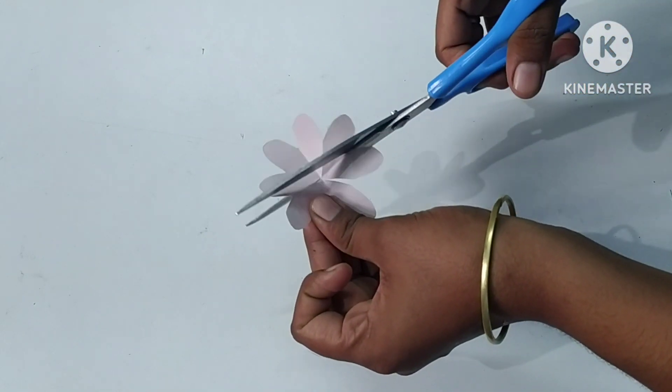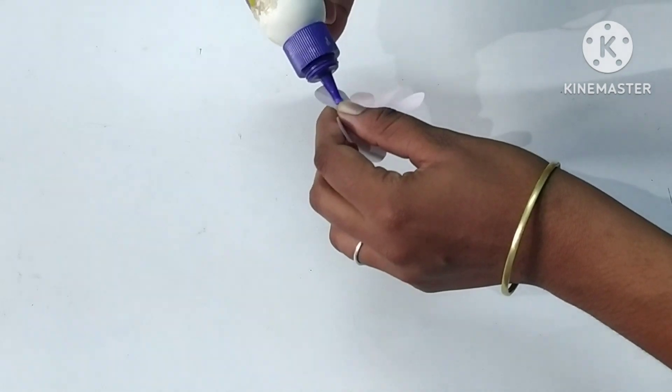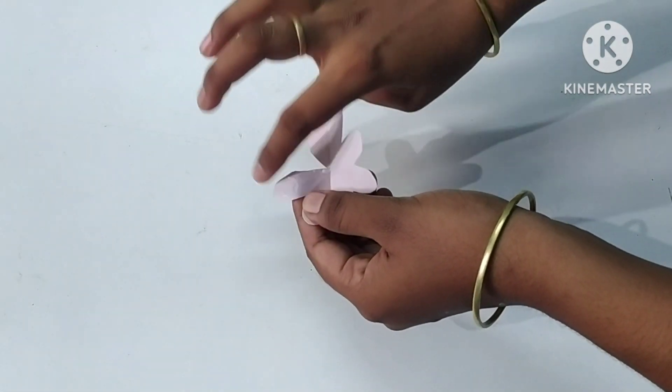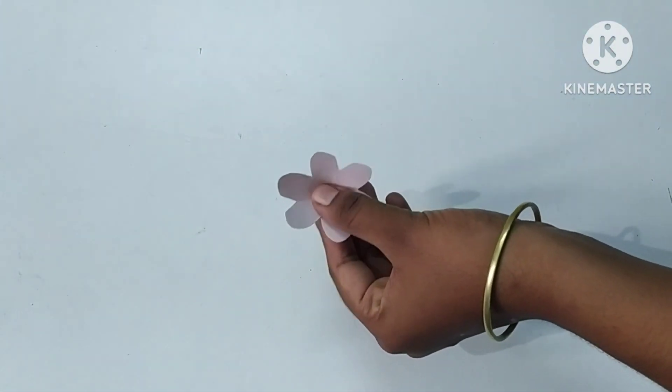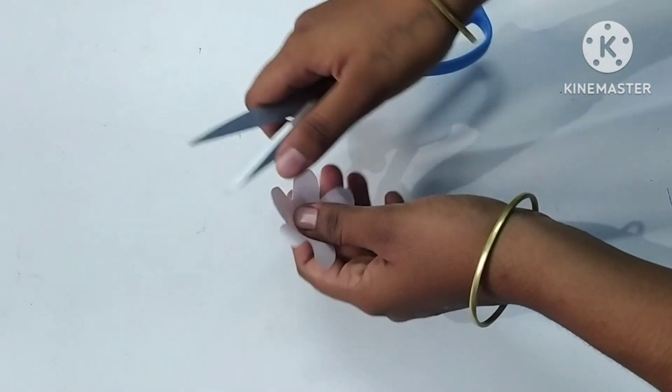Then I will cut the flower. Then I will cut one piece. Then I will add another piece. Now I will add the scissors.